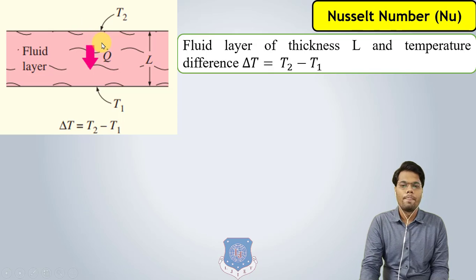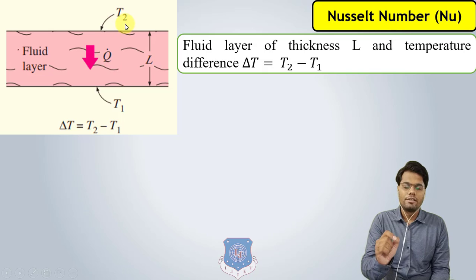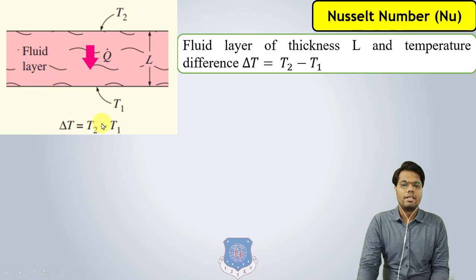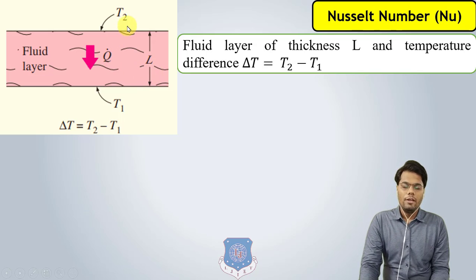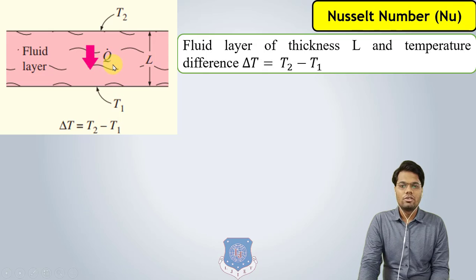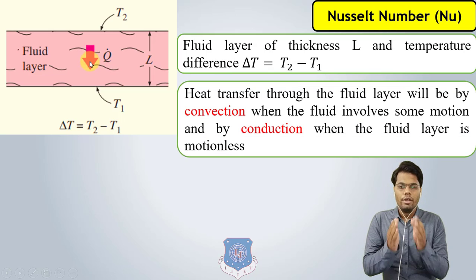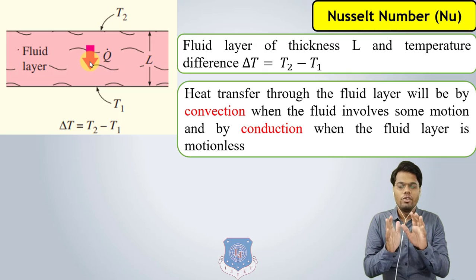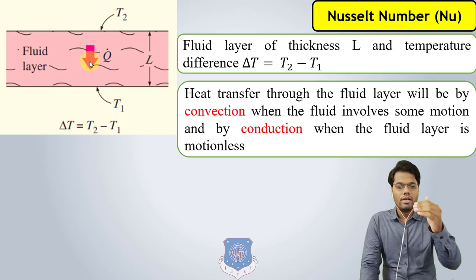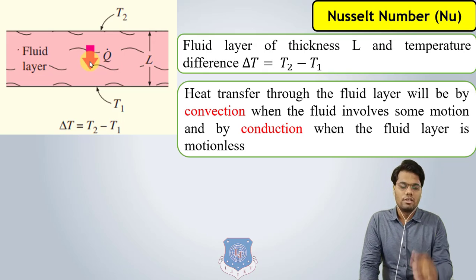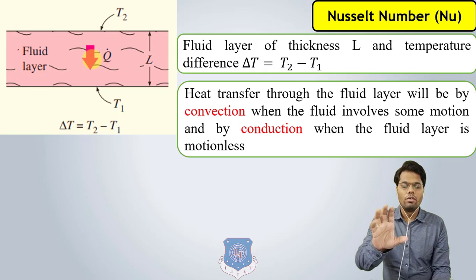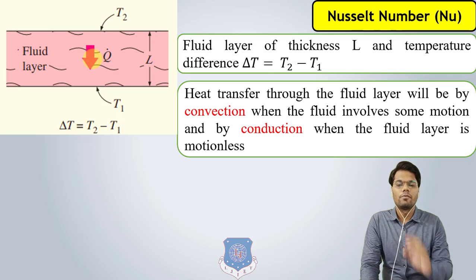Here there is a layer of fluid. The temperature of the bottom layer is T1 and the temperature of the top layer is T2. The temperature difference between the two layers is T2 minus T1. Suppose the thickness of this layer is L. If T2 is greater than T1, heat will flow from higher to lower temperature, that is from T2 to T1. Heat transfer through the fluid layer will be by convection when the fluid has some motion, and by conduction when the fluid layer is motionless. Whenever there is no motion of the fluid, heat transfer is by conduction mode; whenever there is motion of the fluid, heat transfer is by convection mode.